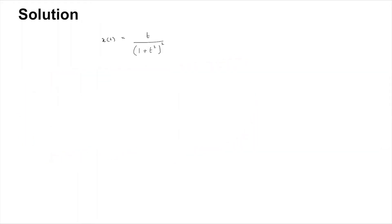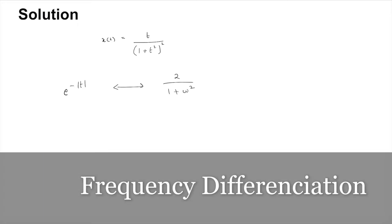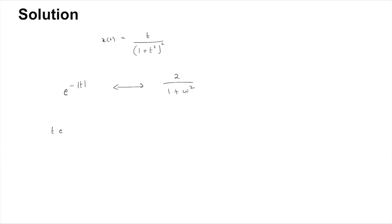Let's start with the solution. First, we have the signal x(t) equal to t divided by (1+t²)². We'll start off with the formula for e^(-|t|), which has the Fourier transform of 2/(1+ω²).